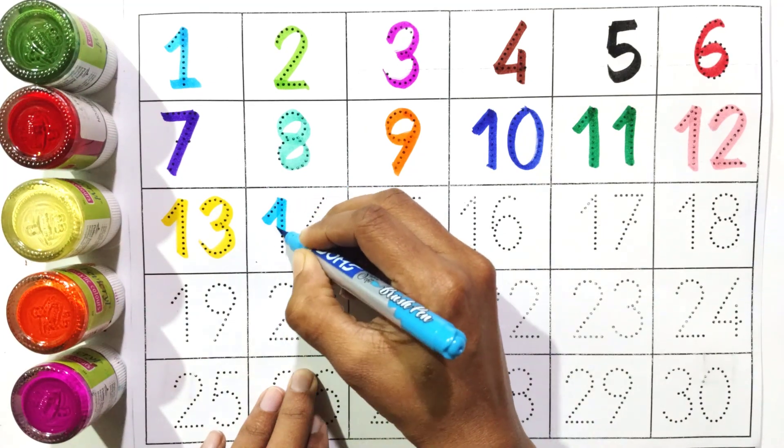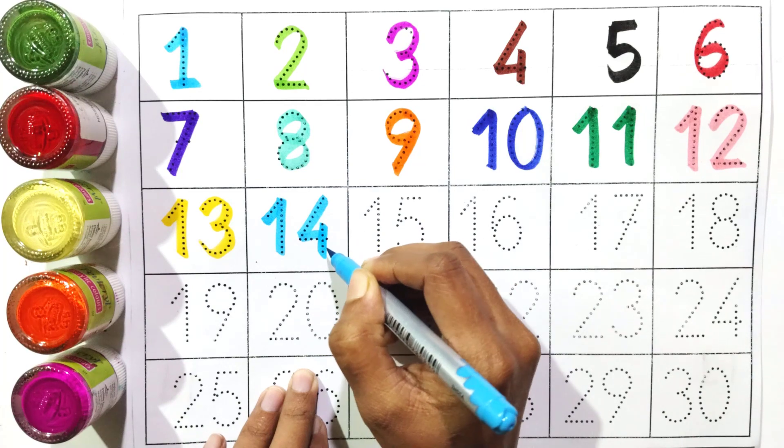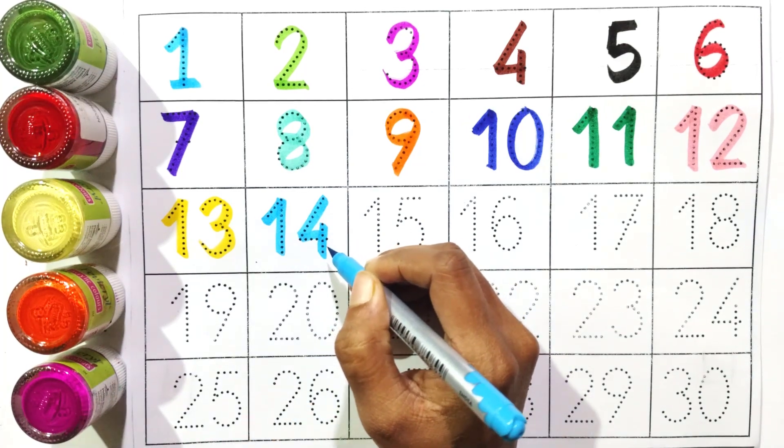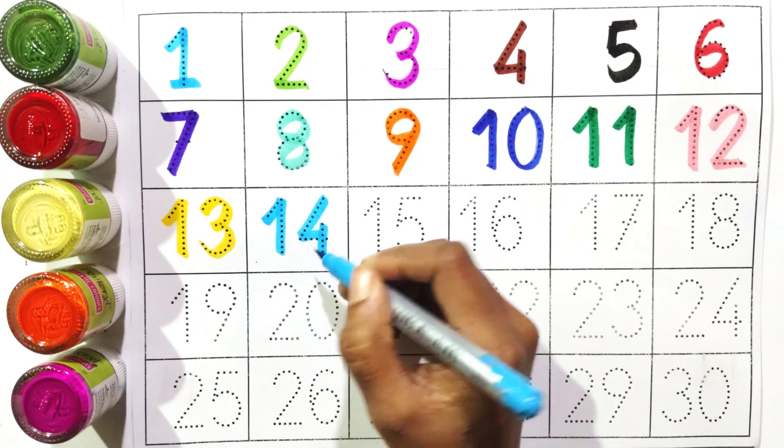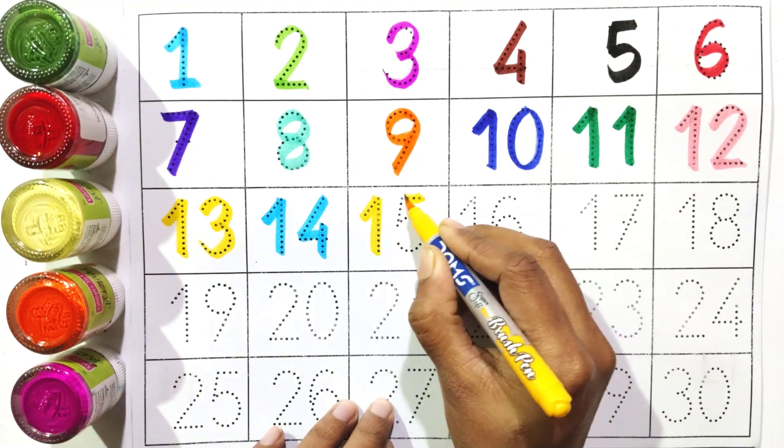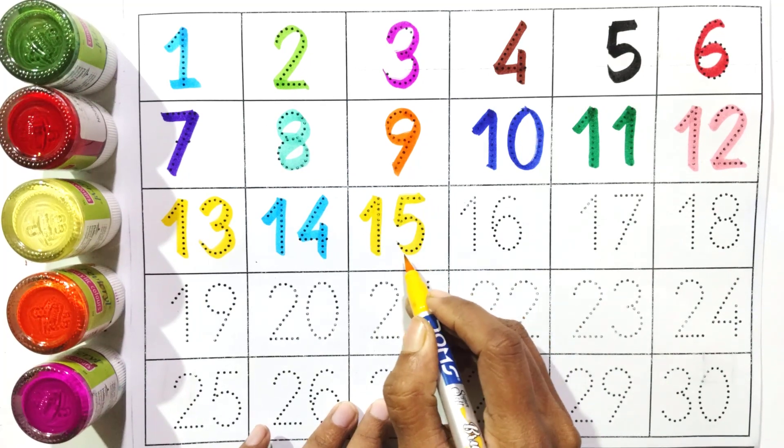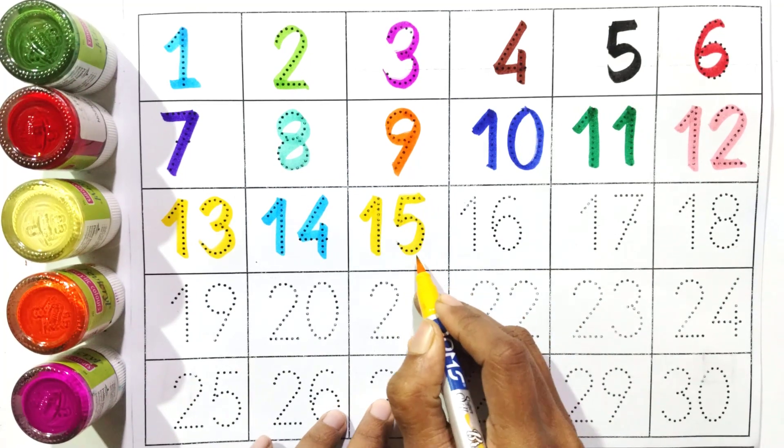One and four: fourteen. Say with me: fourteen. One and five: fifteen. Say with me: fifteen.